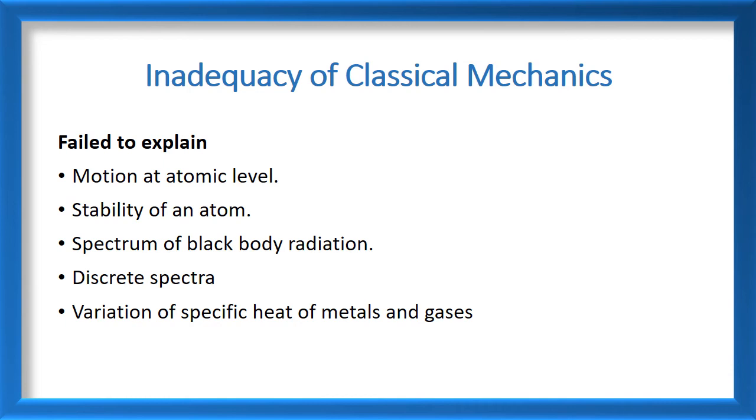The another failure was, the classical mechanics failed to explain the stability of an atom. In Bohr atom model, we have seen that the electrons move around the nucleus in a circular path. But we know that when a charged particle moves along a circular path, it will radiate energy. If it radiates energy, it will lose energy and eventually collapse into the nucleus. This will make an atom highly unstable. But this is not happening in the real world. The atom is stable. Therefore, the classical mechanics failed to explain why an atom is stable.